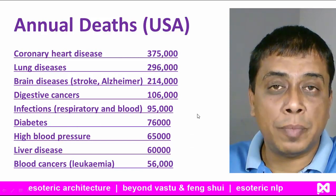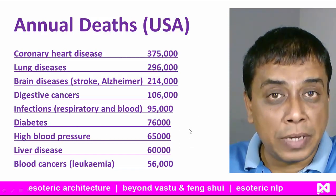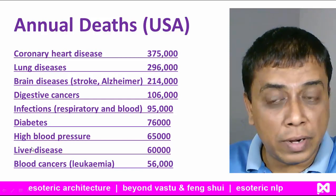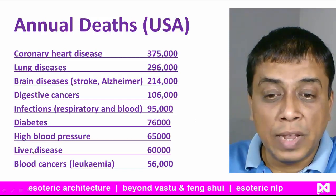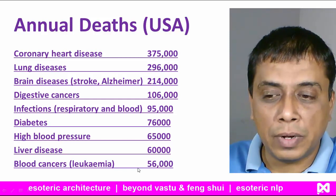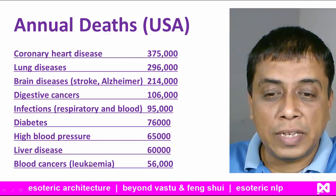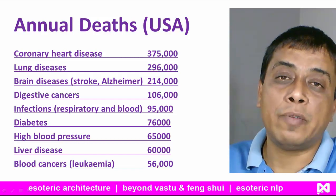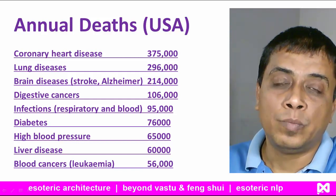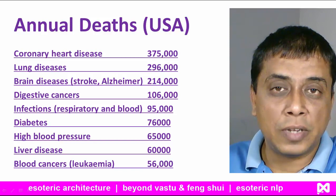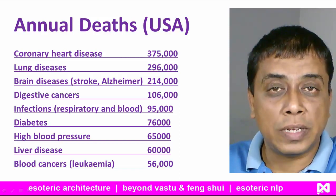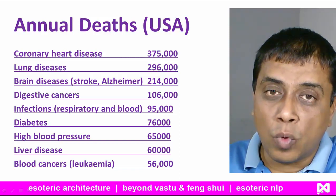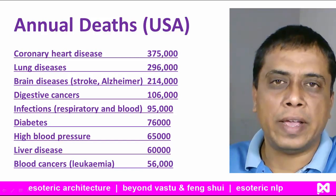Due to diabetes, 76,000 people die a year. High blood pressure, 65,000 people die every year. Liver disease, 60,000 people. Blood cancers and leukemia, 66,000 people die every year. These are just the figures for the USA — if we talk about the entire world, these figures are very high.